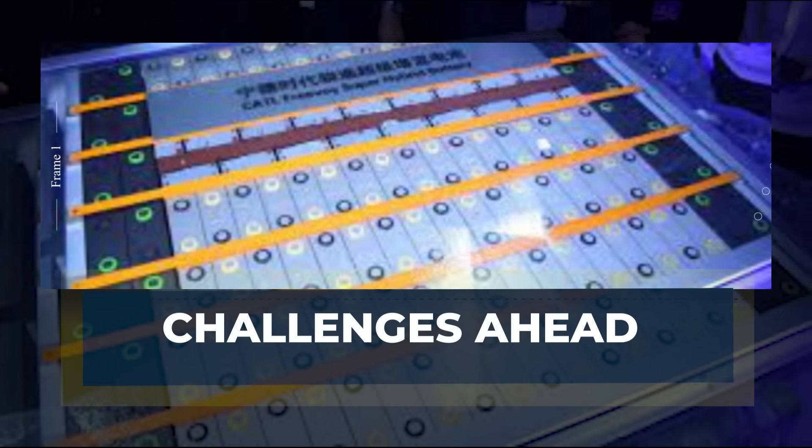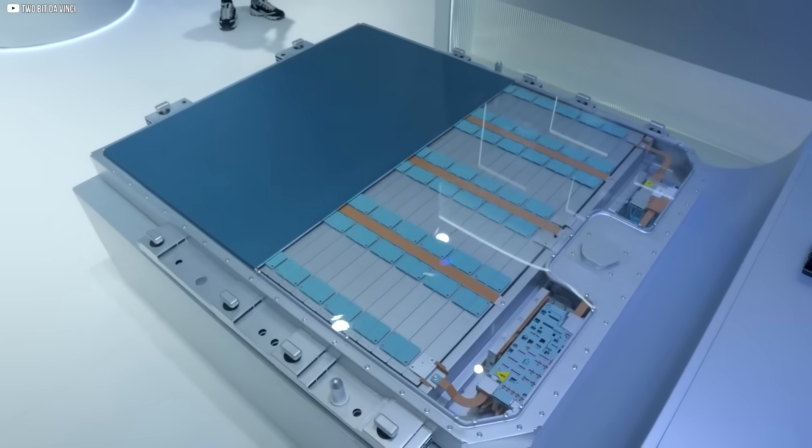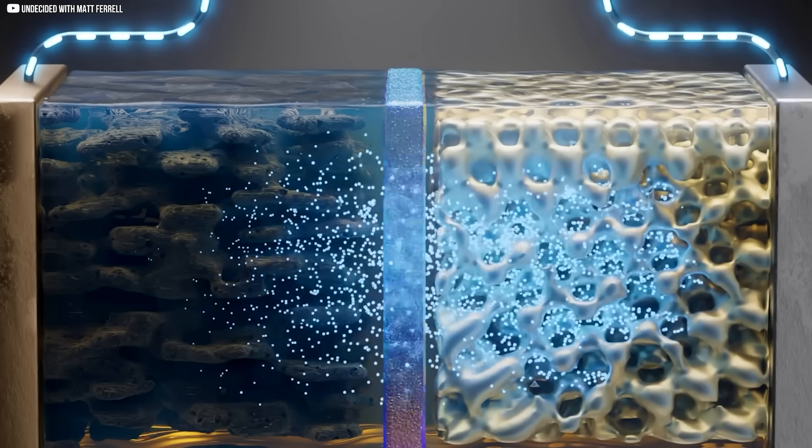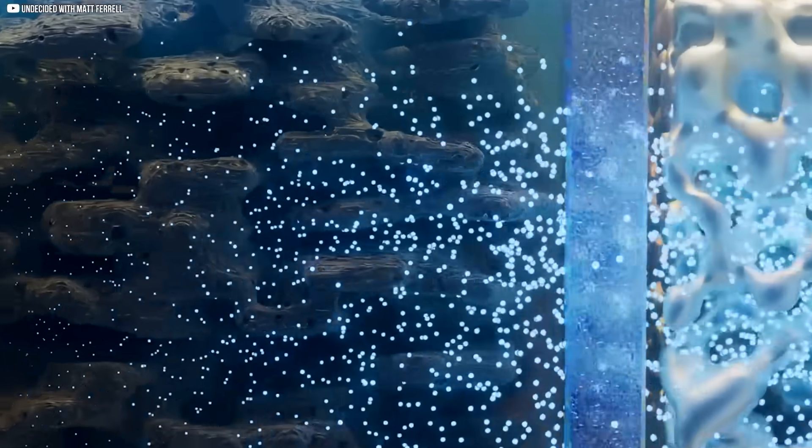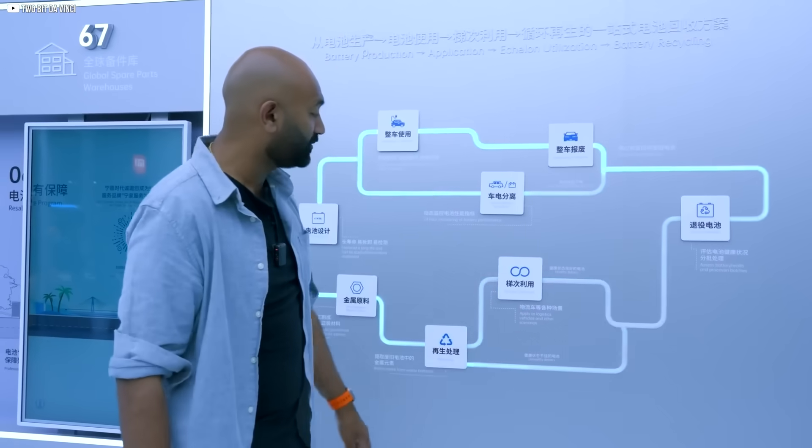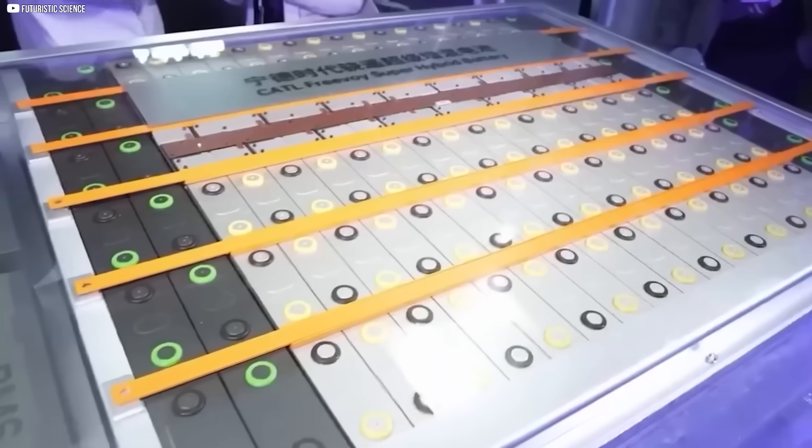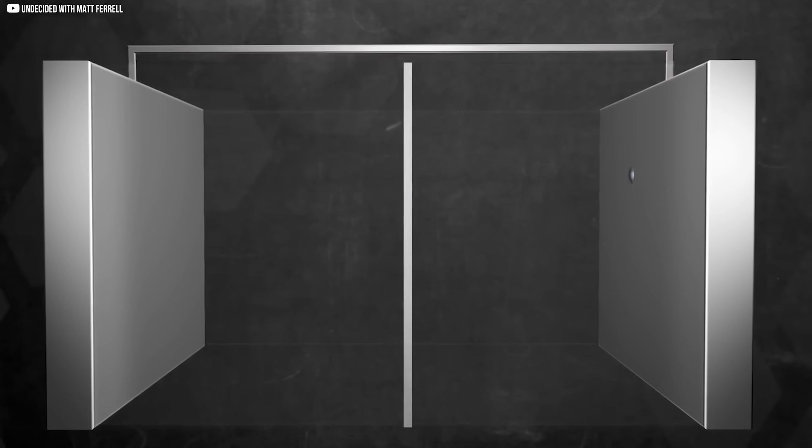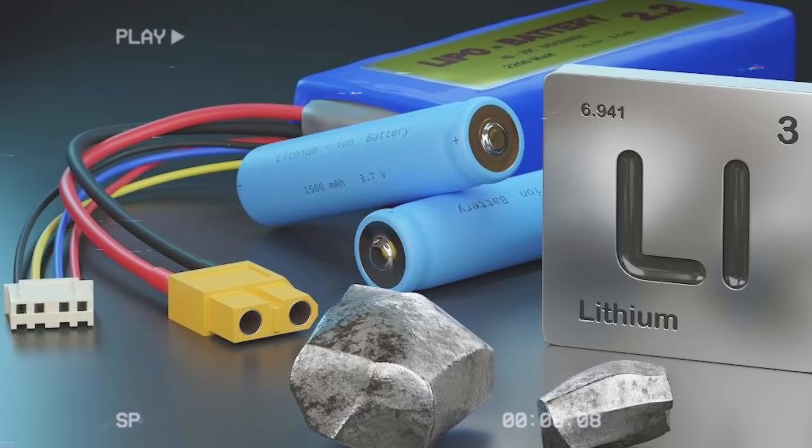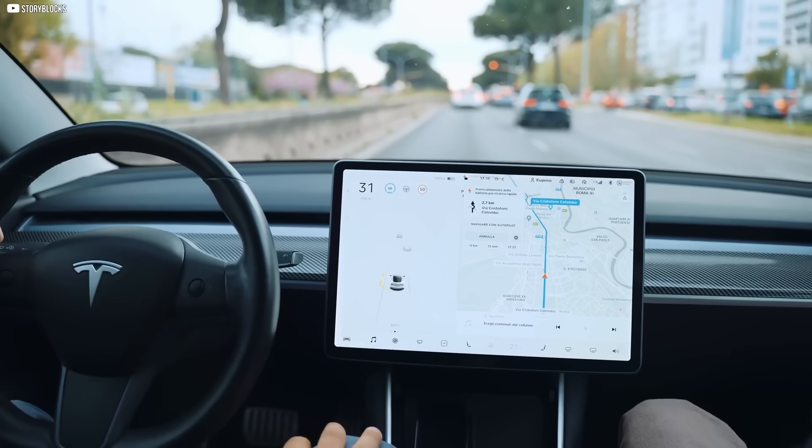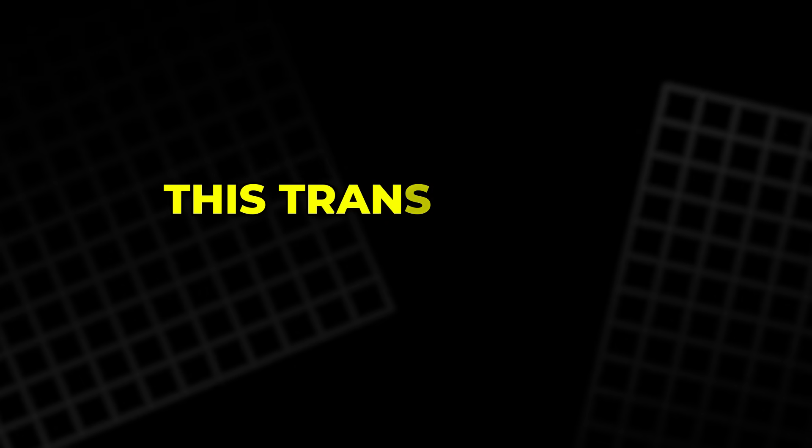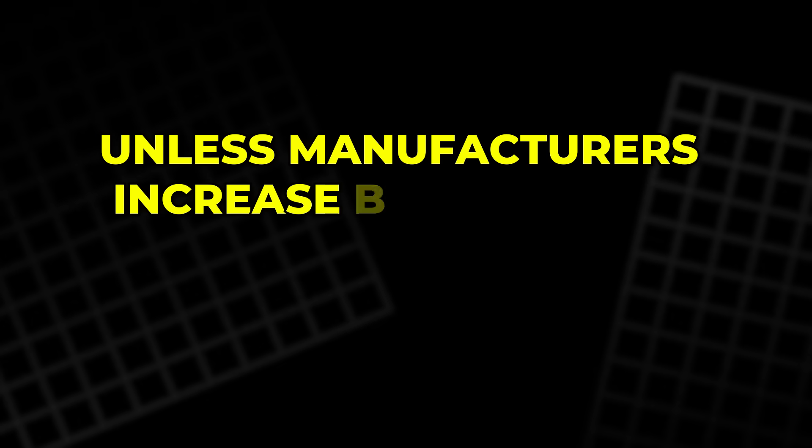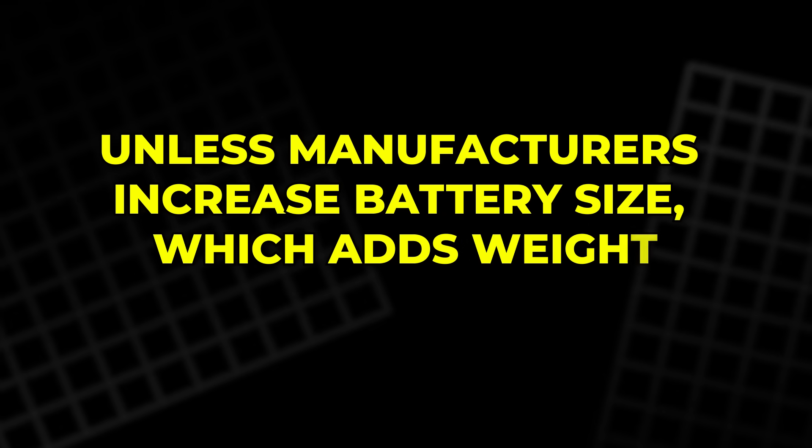Challenges ahead. Despite the growing excitement, sodium-ion batteries still come with challenges that can't be ignored. One of the biggest is energy density. Even with CATL's latest advancements, sodium-ion cells still hold less energy per kilogram compared to high-end lithium-ion batteries. For electric vehicles, this translates to shorter driving ranges unless manufacturers increase battery size, which adds weight and cost.